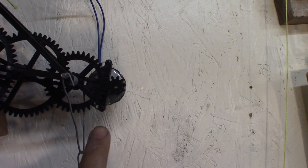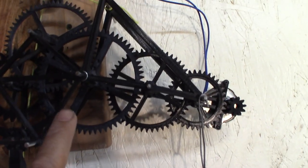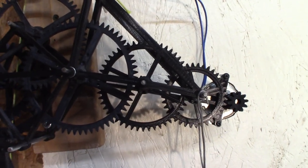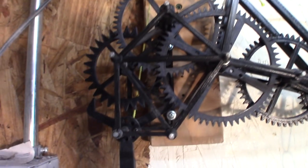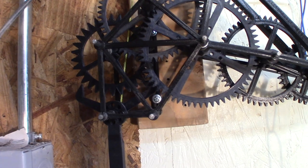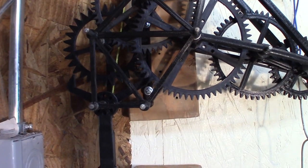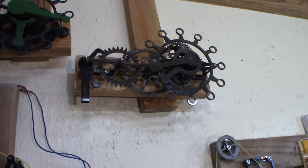So I have a 1 to 180 reduction to the main wheel. And then the main wheel is a 1 to 60 to the escapement, to the recoil escapement that I used on this clock here.